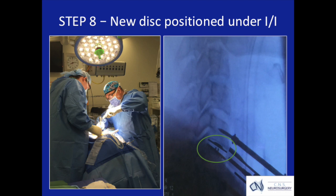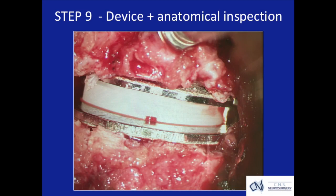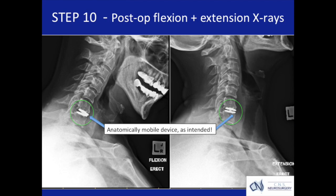It is always a particular joy for me to see that image come up on the screen. After the device is placed, I check that it is seated properly and the surrounding anatomy is exactly as intended. Postoperatively, I obtain formal x-rays — in this instance showing flexion and extension of the cervical spine — with visible intended mobility of the titanium sections of the prosthesis.